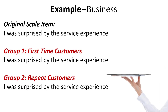Another example from business — a retail restaurant setting — where the scale item doesn't even change. The item was 'I was surprised by the service experience.' For first-time customers, surprise might mean things were really good or exciting, while for repeat customers it might mean the experience was bad or dull compared to previous visits. The same scale item may mean two different things because the groups interpret it very differently — so you're trying to assess whether the meaning of the items is still the same.